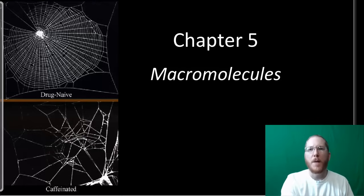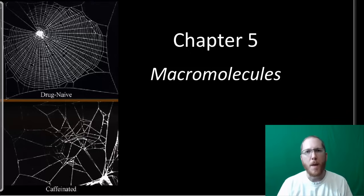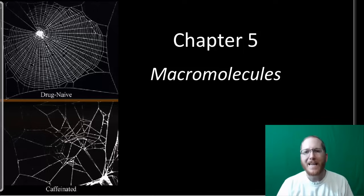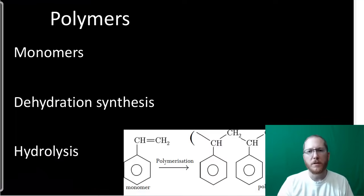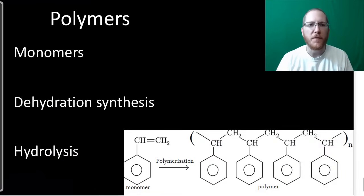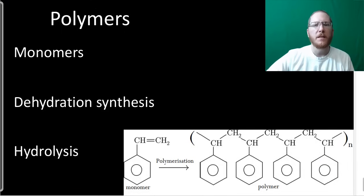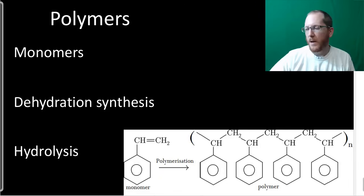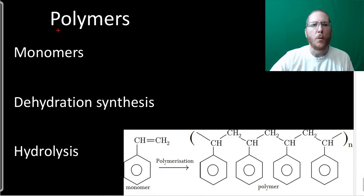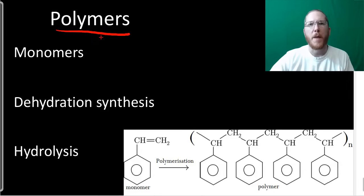Starting off, macromolecule — you should be able to figure that one out. Macro means big, molecule means molecule, so these are big molecules. We're going to use some other terms for them. Macromolecules are typically polymers. This isn't always true, but in general when you talk about polymers, they're types of macromolecules.